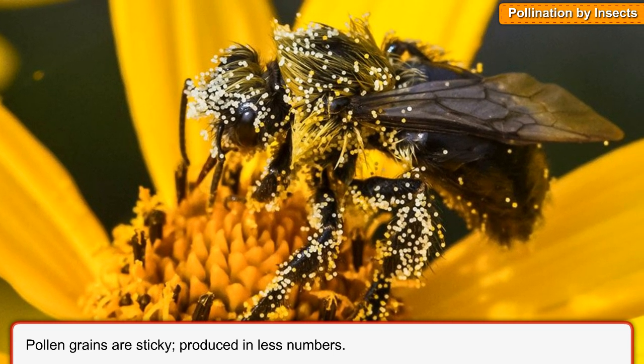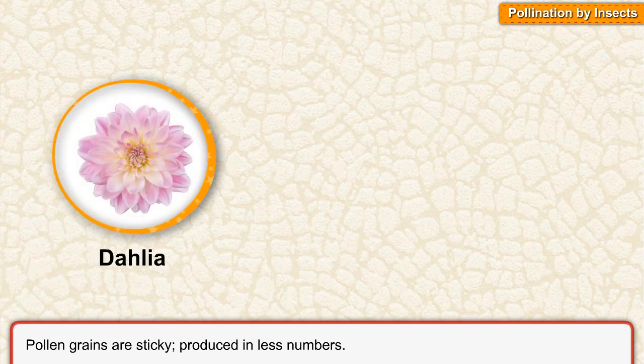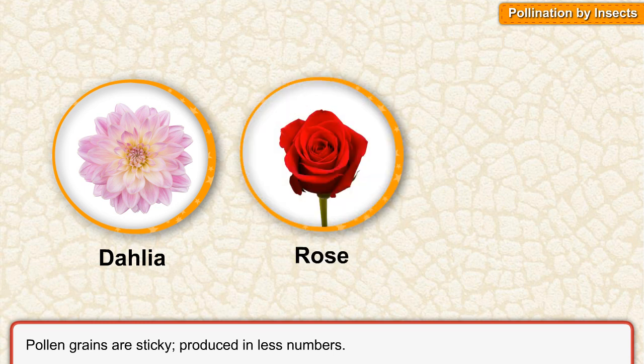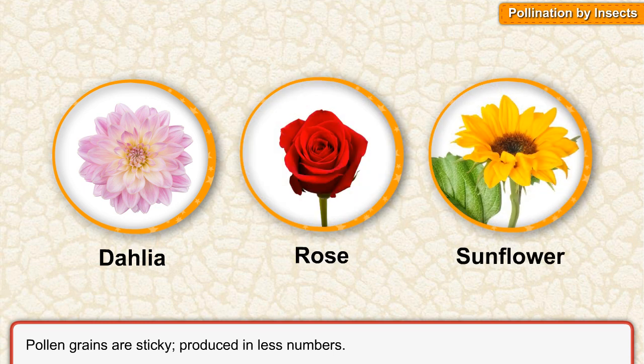Examples of insect-pollinated flowers include Dahlia, Rose, and Sunflower.